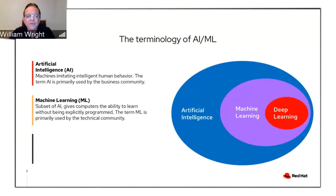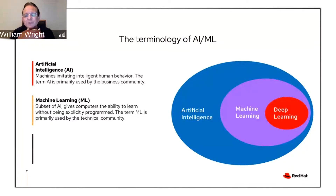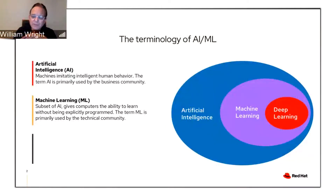There's a subset of artificial intelligence called machine learning, which gives computers the explicit ability to learn without being programmed. A machine can take in information, make determinations, and feed that back. It's primarily used by the technical community but is more and more becoming a broad-use term.